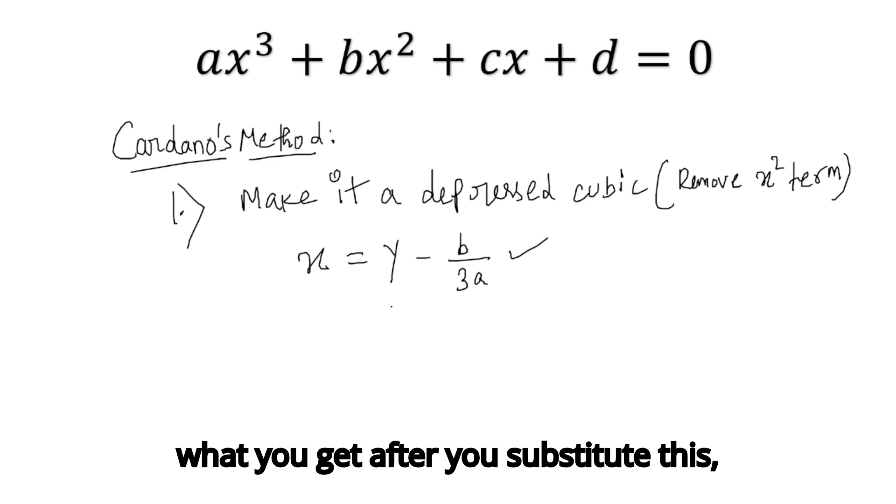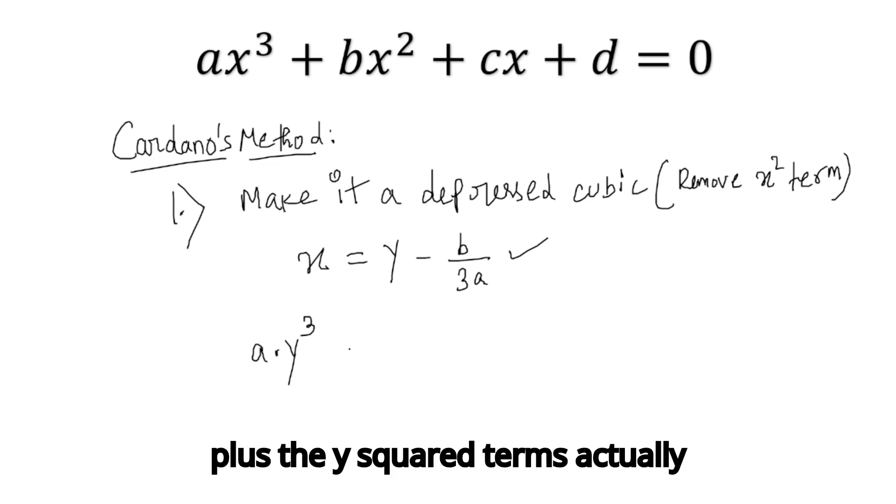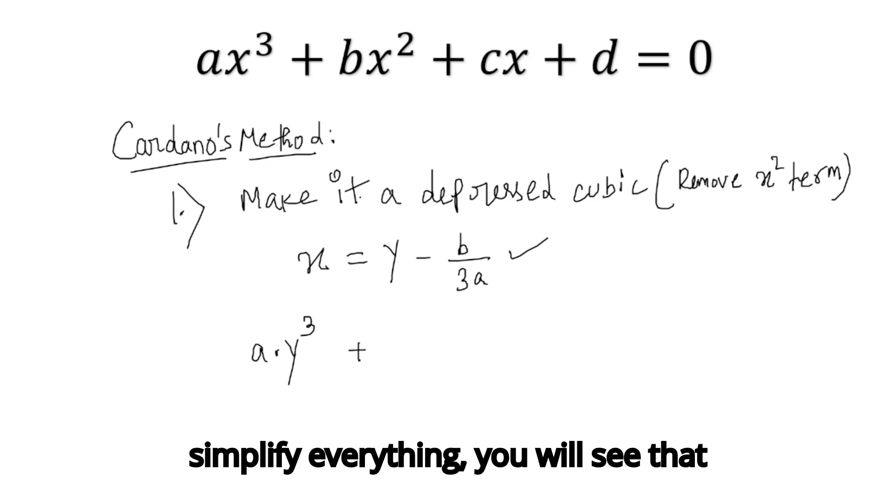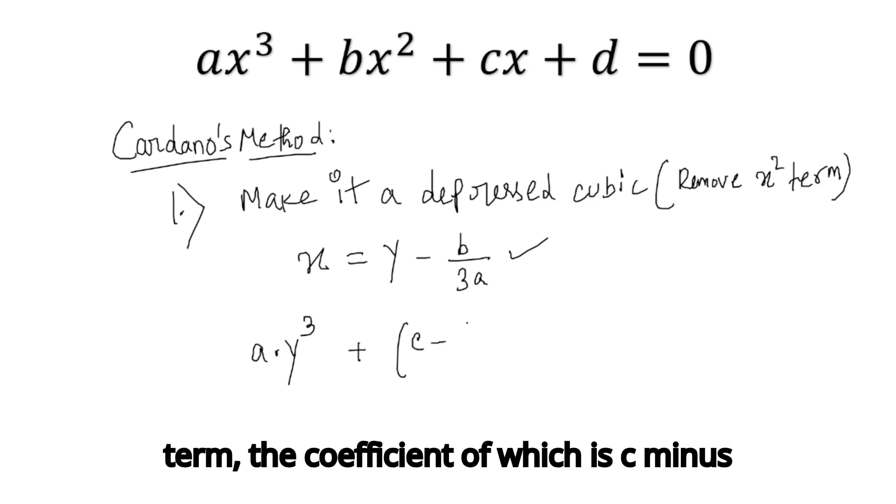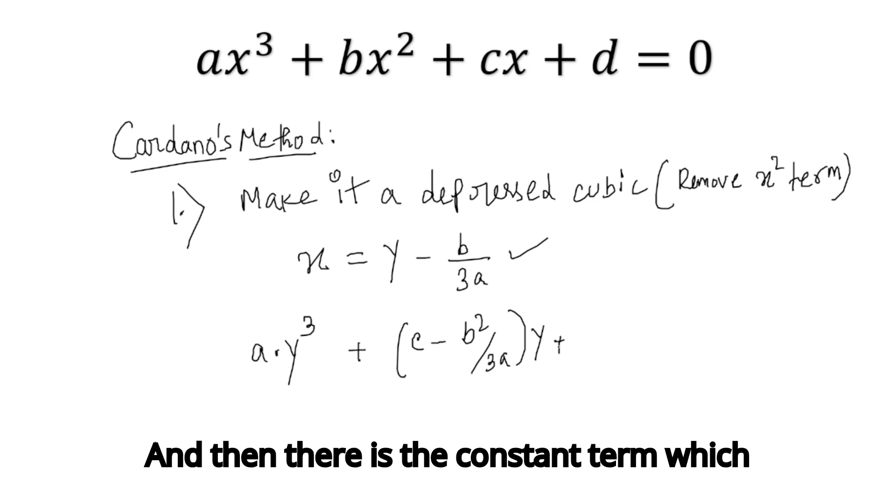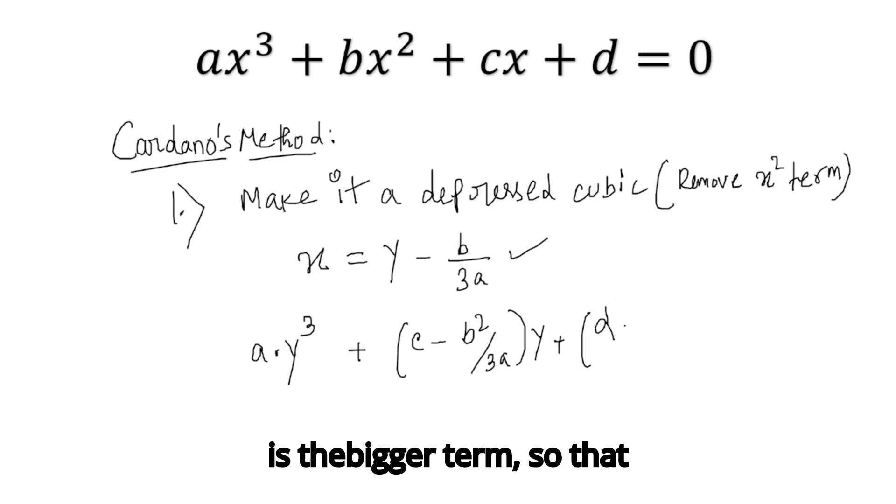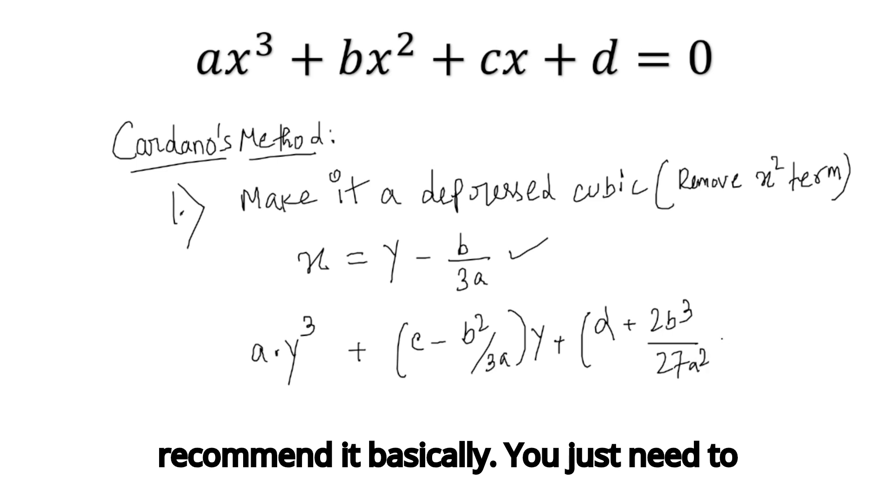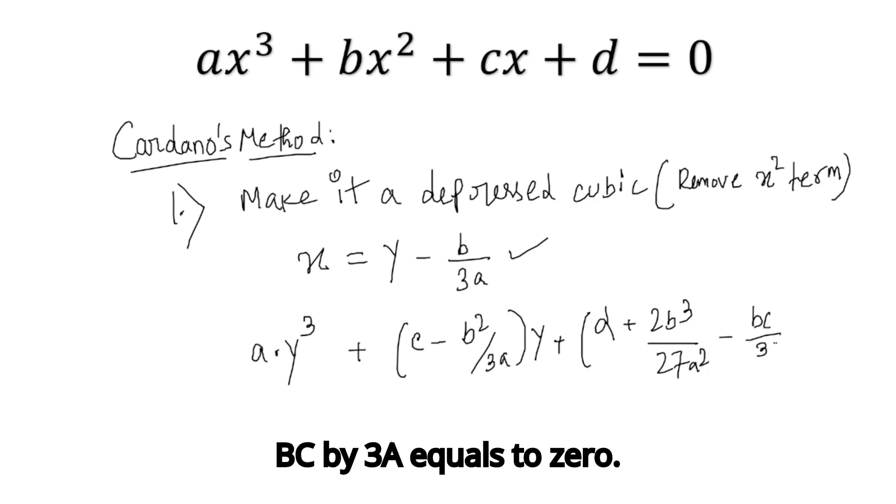When you do this substitution, you get a cubic in y, and that cubic equation looks like this: a·y³ plus the y² terms actually vanish, plus (c - b²/(3a))·y plus the bigger constant term minus bc/(3a) = 0. This is why people don't usually memorize this. But once you do it enough, you can memorize it, but I don't recommend it. You just need to know the procedure.